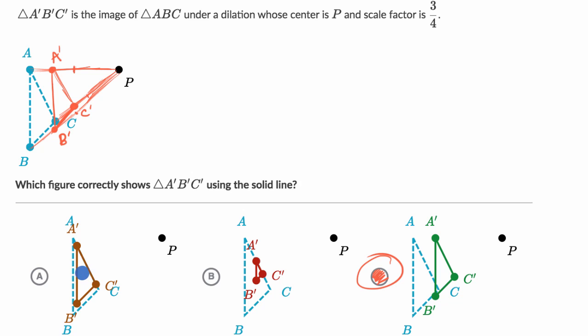But let's just make sure we understand why these other two choices were not correct. So choice A, it looks like it is a dilation with a 3 fourths scale factor. Each of the dimensions, each of the sides of this triangle looks like it's about 3 fourths of what it originally was.